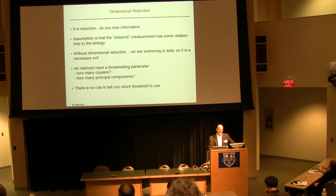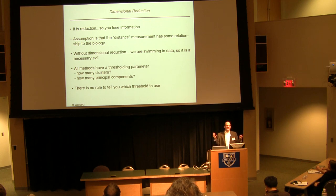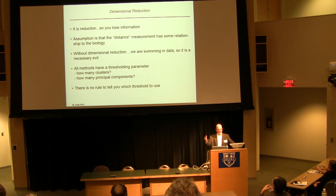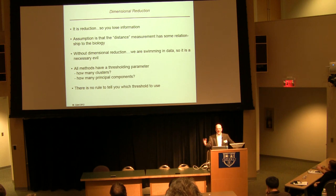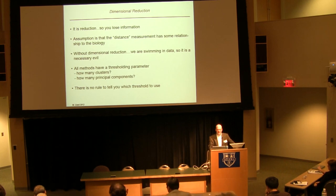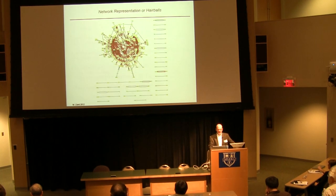Dimensional reduction drawbacks: it is reduction, so you lose information. The big assumption is that the distance measurement — Euclidean, though various metrics can be used — has some relationship to the biology; in other words, that there is some developmental or differentiational distance between a naive B cell and an activated B cell. Without dimensional reduction we're swimming in data, so it's a necessary evil. And all these methods have some thresholding parameter: how many clusters, how many principal components, how much reduction — and there's no rule to tell you which to use.